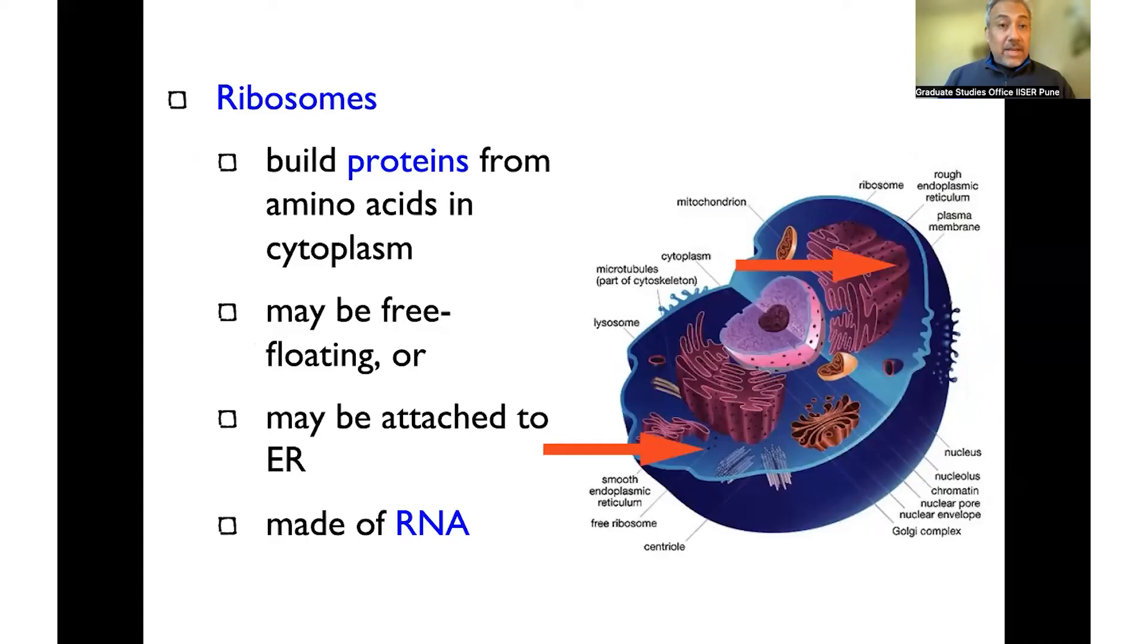Then we have ribosomes, which build proteins, and are associated with RNA, and use the information that's coming in the RNA to make the proteins that the cells need.